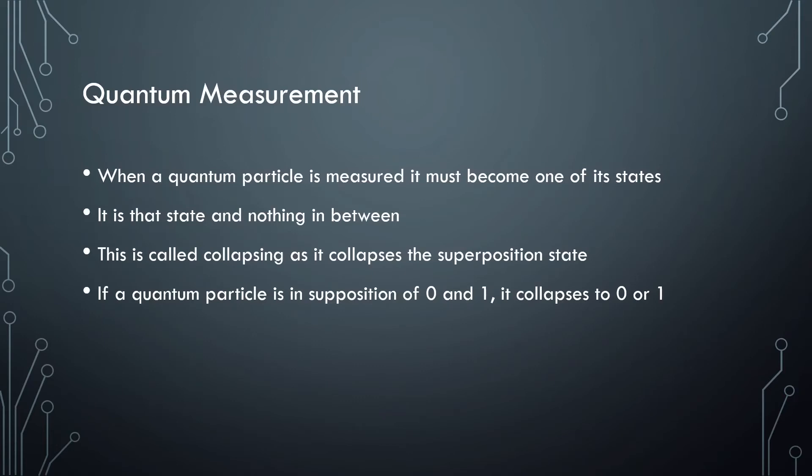Related to superposition, there is quantum measurement. When a quantum particle is measured, it must become one of its states. It is in that state and nothing in between. This is referred to as collapsing because it collapses the superposition state. For example, if a quantum particle is in superposition of 0 and 1, it collapses to 0 or 1 like a binary bit.